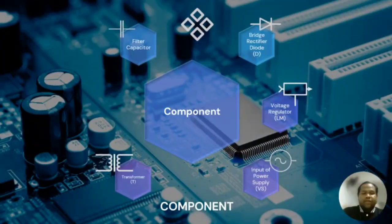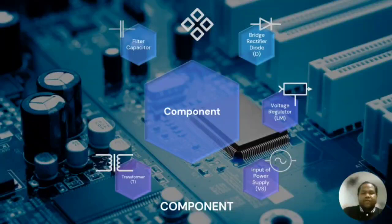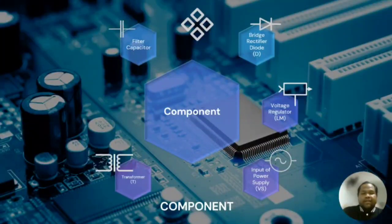Third is the voltage regulator. This regulator effectively controls the output voltage, ensuring stability even in the face of variation in input voltage or load conditions. Also, the power supply input VSS supplies electric power to an electrical load; the main purpose of a power supply is to convert electric current from a source to the correct voltage, current, and frequency to power the load. Last but not least is the transformer, designed to step down the voltage from the primary coil input to the secondary coil output.